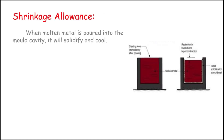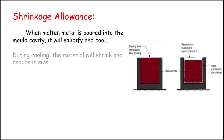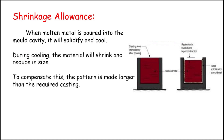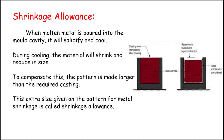The first one is shrinkage allowance. When the molten metal is poured into the mold cavity, it will solidify and cool. During cooling, the material will shrink and reduce in size. To compensate for this, the pattern is made larger than the required shape. This extra size given on the pattern for metal shrinkage is called shrinkage allowance. See the image — the red one is the molten metal in the first image. Now after cooling, see the right image — it has shrunk due to cooling, so the size varies from left to right.